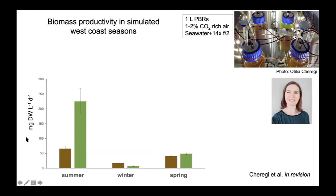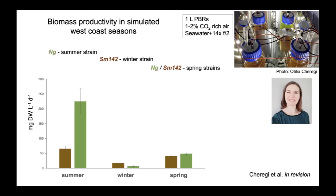Otilia's first data were about productivity — how much biomass they produce per liter per day — for both strains across summer, winter, and spring. The data speak for themselves: in summer, Nannochloropsis was the most productive strain; in winter the numbers were much lower, but Skeletonema grew better; in spring they were more or less similar in productivity.